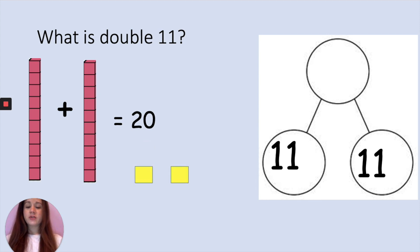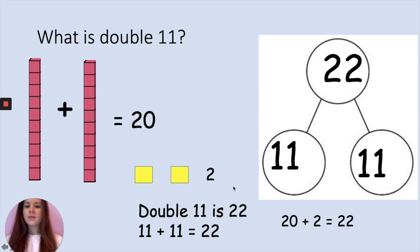And then we have 2 ones left, so 1 add 1 is 2, and then we can add our tens, 20, and our ones, 2, to make 22. So 11 add 11 is 22. Double 11 is 22. 11 add 11 is 22.